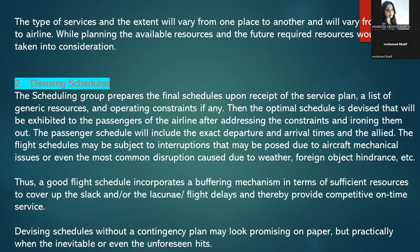What you see as a passenger when checking flight availability and timings is the result of the scheduling group preparing the schedule, addressing constraints, and finalizing the list. The passenger schedule includes exact departure and arrival times. However, flight schedules may be subject to interruptions caused by aircraft mechanical issues or common disruptions due to weather, foreign object influence, and so on.